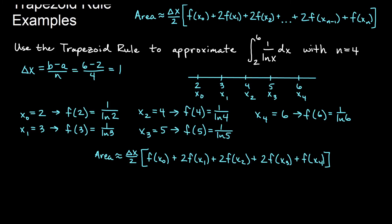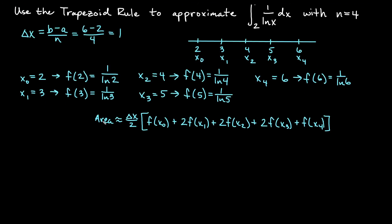Let's go ahead and approximate our area then. So we will have area is approximately delta x over 2 would just be 1 half because delta x is 1 here. And then we'll have 1 over ln 2 plus 2 over ln 3 plus 2 over ln 4 plus 2 over ln 5. And then we will have plus 1 over ln 6.